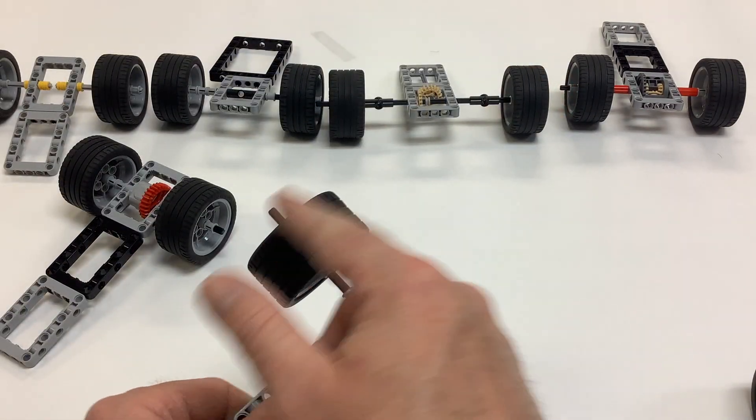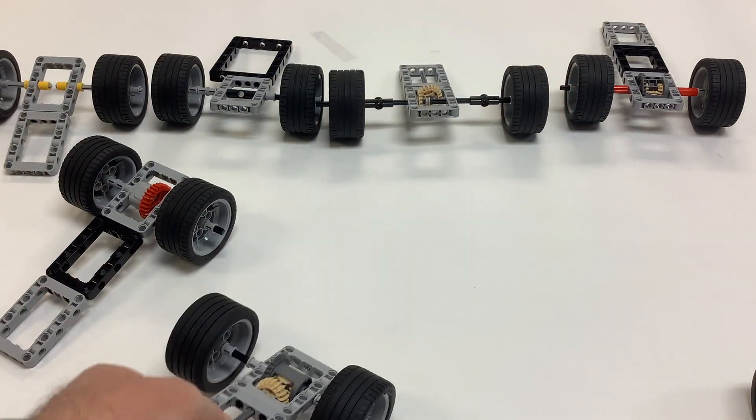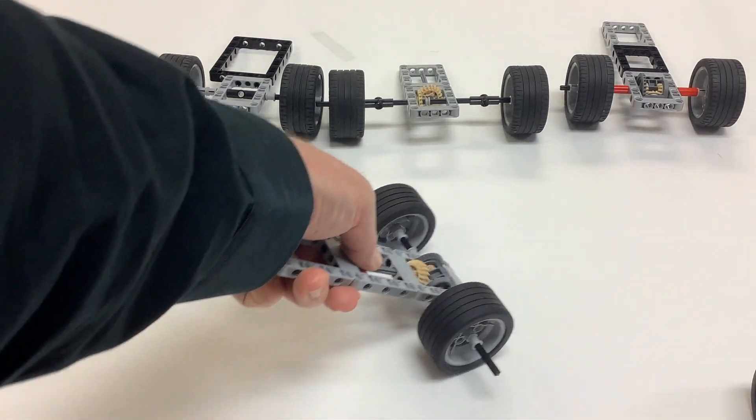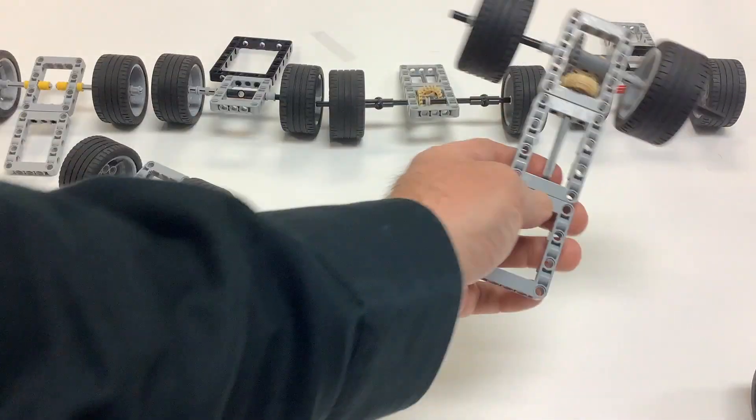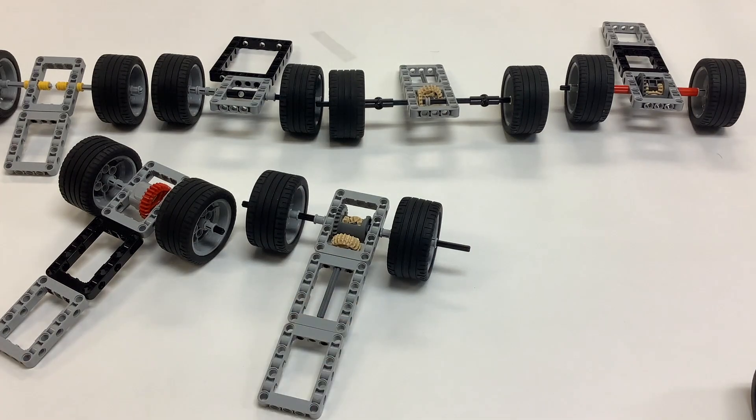That outer wheel will spin faster than the inner wheel, and yet you're still driving both of them. And so that's the magic of the differential.